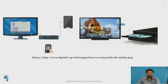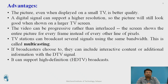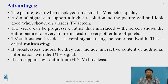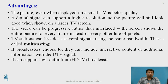The advantages of digital television are: the picture provides better quality even on a smaller TV. A digital signal can support high resolution, so the picture looks good on larger TVs as well and will not get blurry. In analog TV we have only 480 pixels, so resolution is less and the picture gets blurry on large displays with loss of sharpness and color contrast. The video can be progressive rather than interlaced; progressive scanning displays the entire picture for every frame instead of every other line.